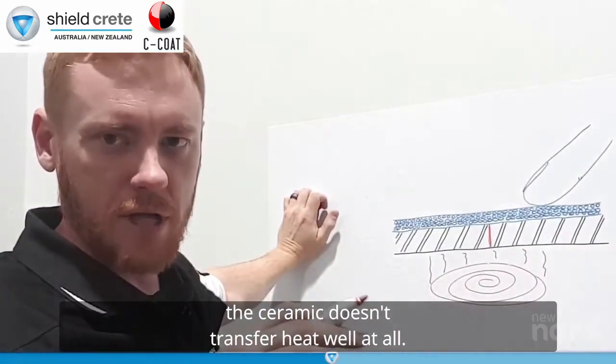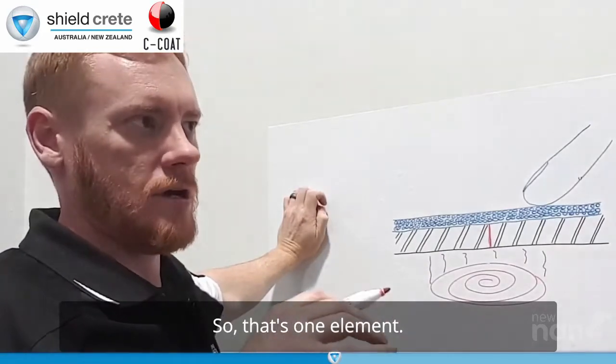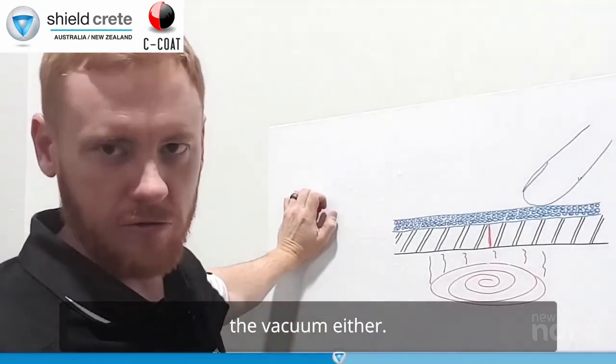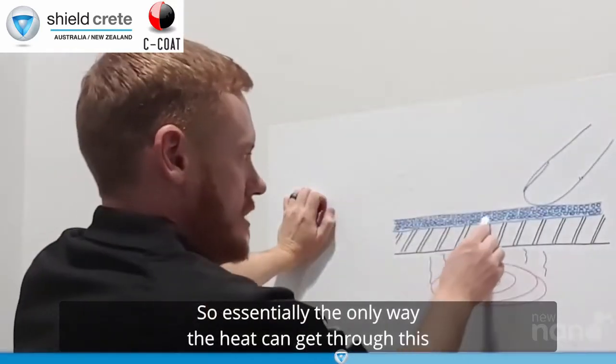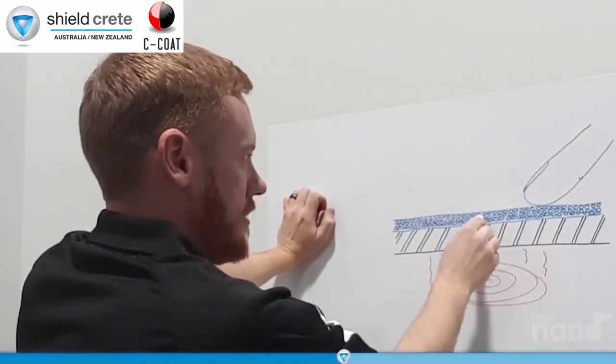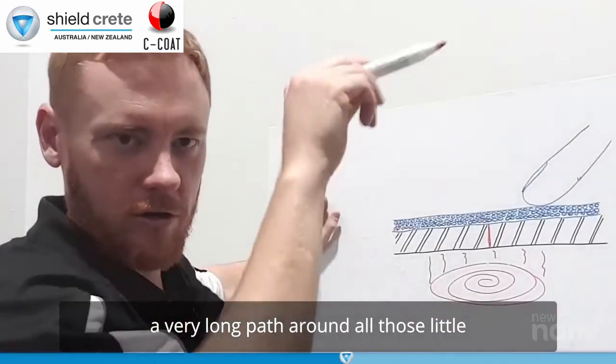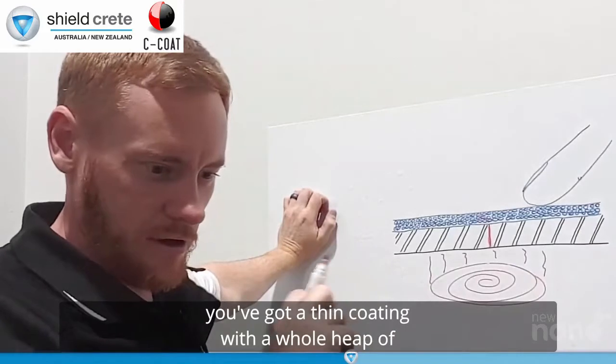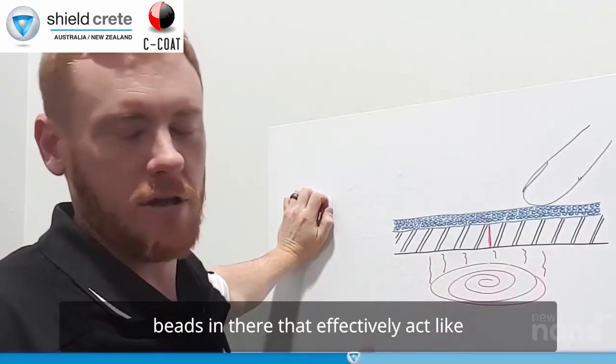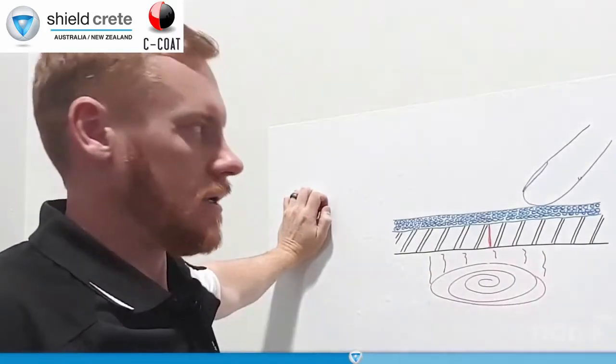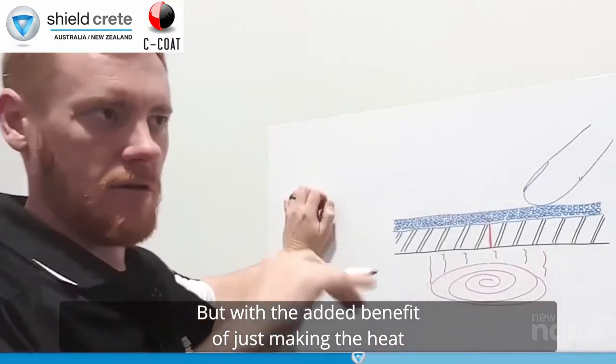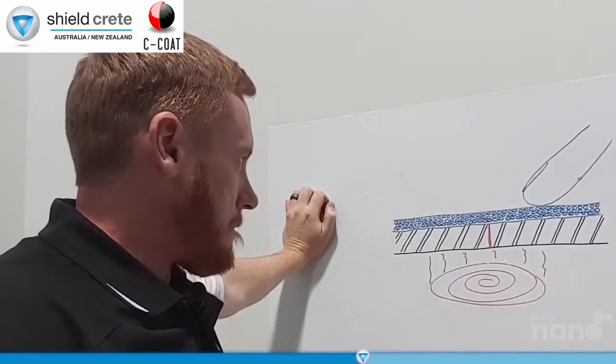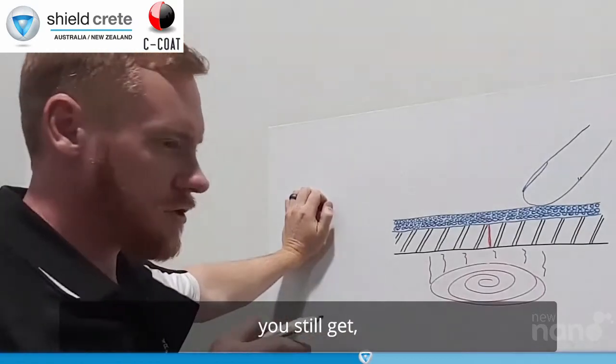But we'll focus on the beads for now because they do the majority of it. It hits the ceramic. The ceramic doesn't transfer heat well at all. So that's one element. And because it's vacuum-filled, heat doesn't travel through the vacuum either. So essentially, the only way the heat can get through this is to take a very long path around all those little ceramic beads. So effectively, you've got a thin coating with a whole heap of beads in there that effectively act like double-glaze windows. But with the added benefit of just making the heat travel in a path that is quite long compared to what it would normally travel.